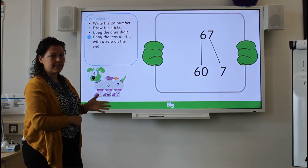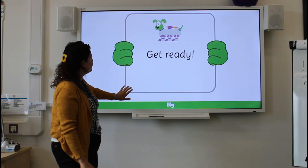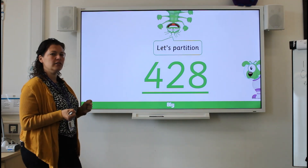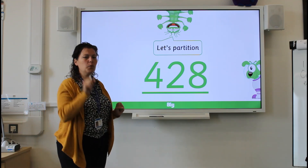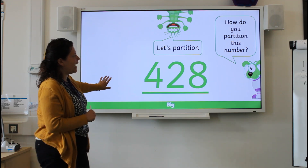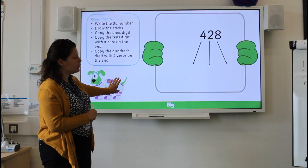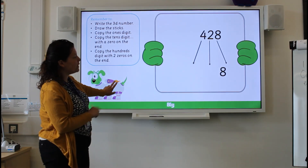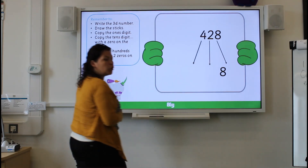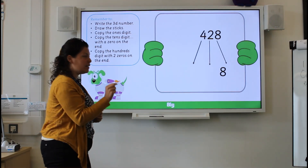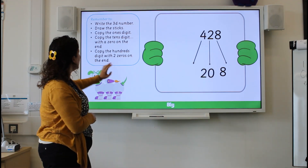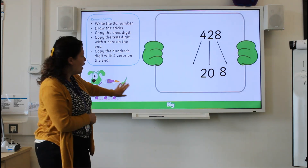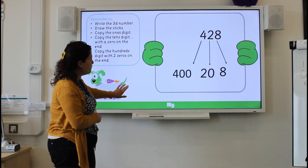Now it's over to you — 428. Have a quick go and then we're going to come back and work together, so pause the video. Well done! Let's have a look — how do you partition this number? Just like we did with the two-digit number, draw the sticks, copy the ones digit, then copy the tens. Remember, you can't just write two because that's actually two tens and two tens is 20. The same with the hundreds — you can't just write four because that's four lots of one hundred, and four lots of one hundred is 400.